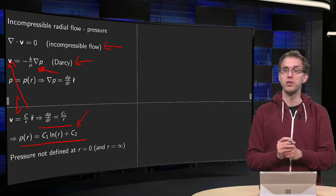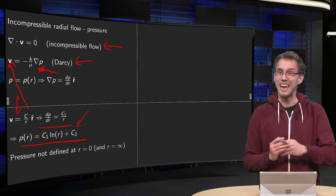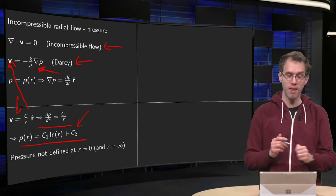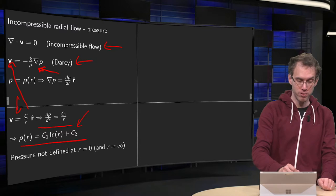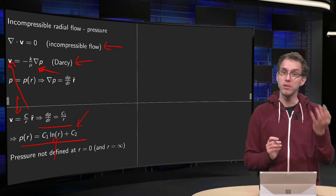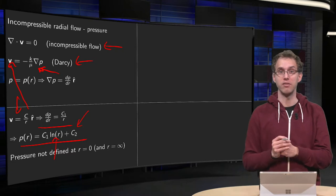Well, this other constant c2 is always there, because you always can gauge your pressure, so you can always add some constant, so that's natural. We do have a problem though with this other term, because the logarithm will blow up both as r equals zero and r equals infinity.